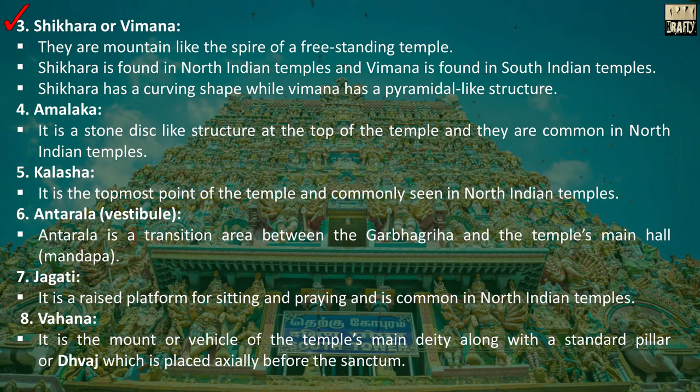Third, Shikhara or Vimana. They are mountain-like spires of a freestanding temple. Shikhara is found in North Indian temples and Vimana is found in South Indian temples. Shikhara has a curving shape while Vimana has a pyramidal-like structure. Fourth, Amalaka — it is a stone disc-like structure at the top of the temple and is common in North Indian temples.